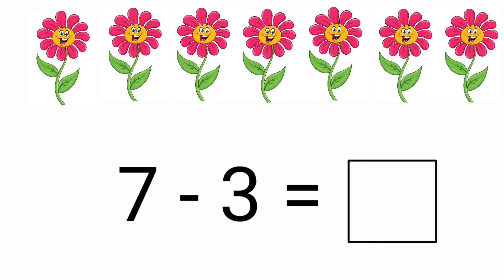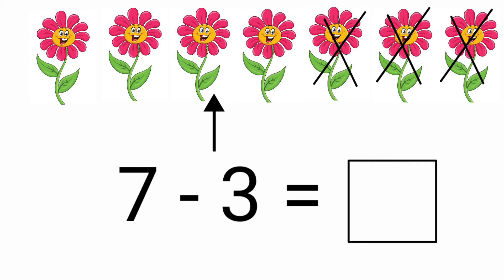Look at the next picture. How many flowers are there? There are 7 flowers. 7 minus 3 equals. Here we need to subtract 3 flowers from 7 flowers. Let's subtract from right to left: 1, 2, 3. How many flowers are left? There are 4 flowers left: 1, 2, 3, 4. The answer is 4. Let's write it in the given box: 7 minus 3 equals 4.